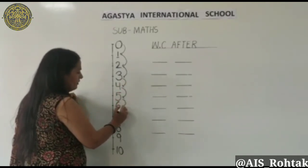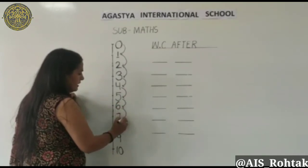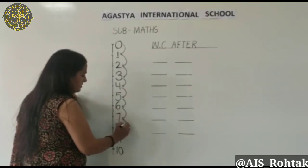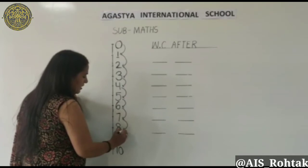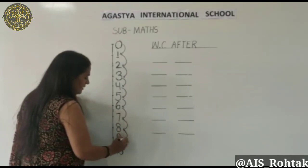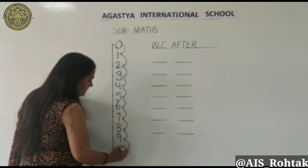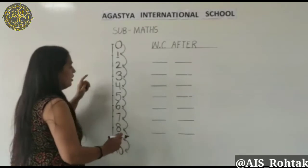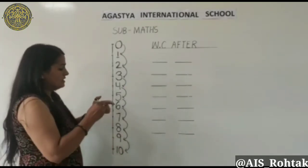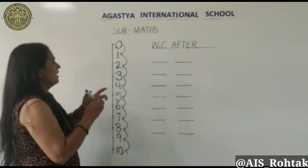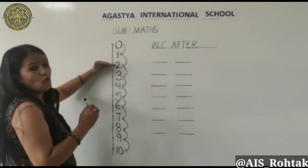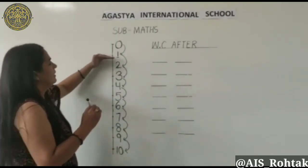After 4 it's 5. After 5 it's 6. After 6 it's 7. After 7 it's 8. After 8 it's 9, and after 9 it's 10. Ab bachcha samajh jayega ki agar baad hota hai toh woh after hai.